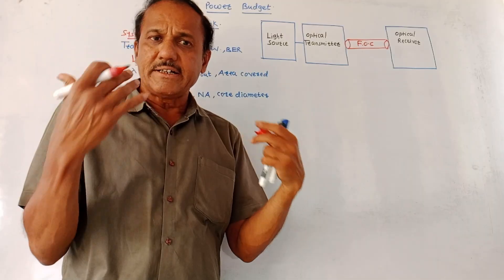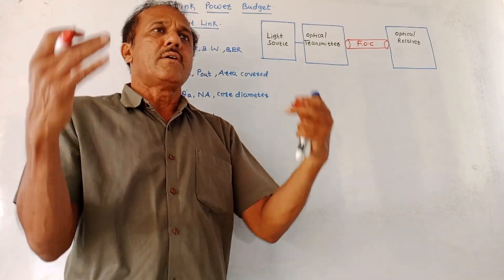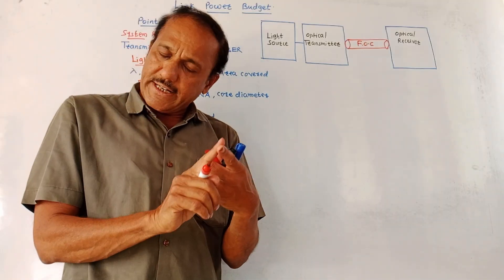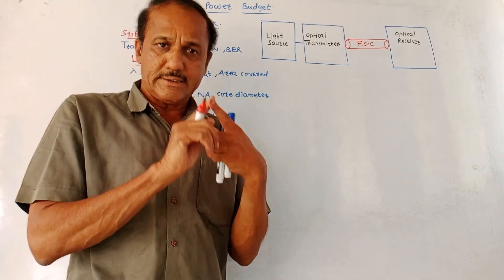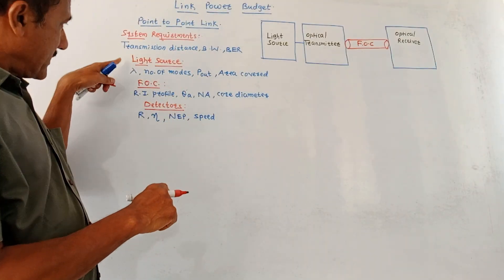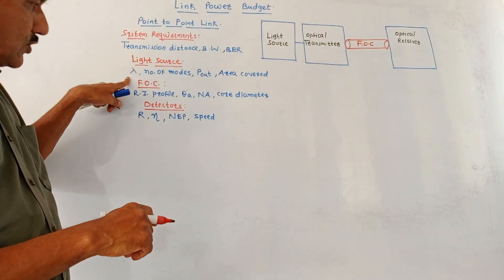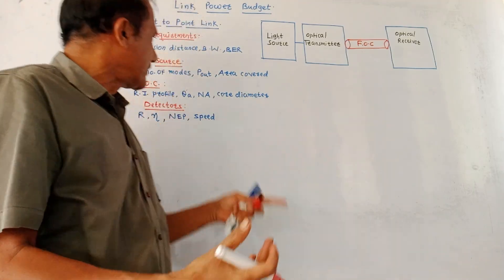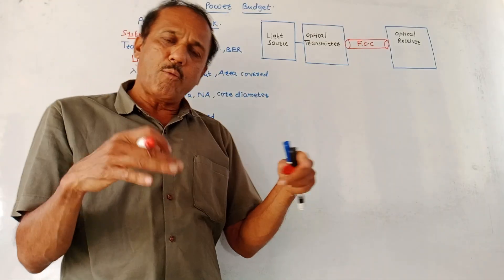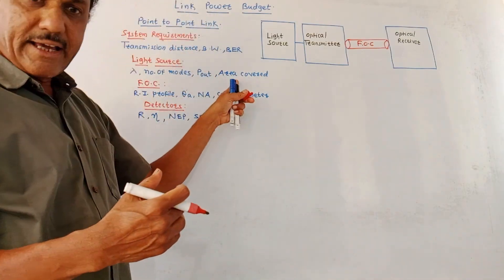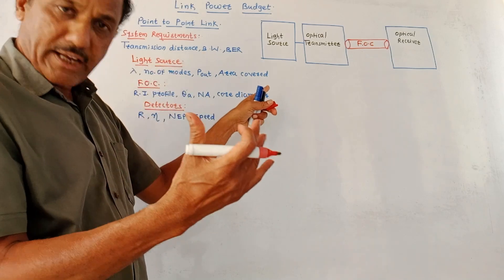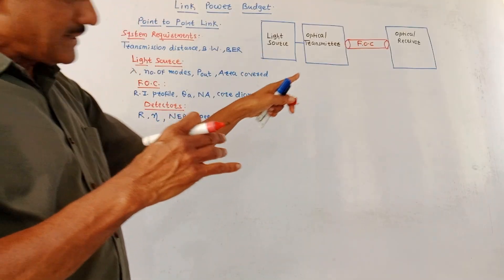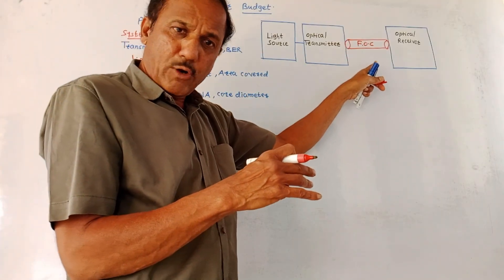The light source is an important part of link design. We have studied different light sources in earlier sessions — usually LED (light emitting diode) or laser diodes are used. The selection of a light source depends on the operating wavelength (lambda), the number of operating modes, P_out (optical output power from the light source), and the area covered by the light source.